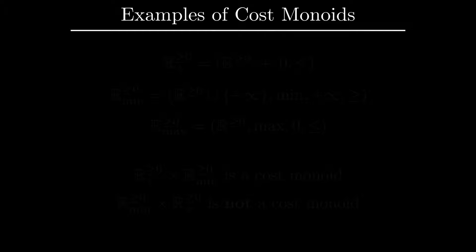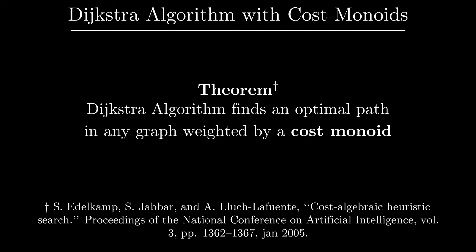Importance of the concept of the cost monoid is highlighted by the following theorem, which appeared in the reference at the bottom of this slide. It turns out that Dijkstra algorithm will always succeed in finding an optimal path between any two vertices as long as cost values form a cost monoid. As a matter of fact, many other classical algorithms in motion planning will work with cost monoids in place of positive real-valued costs, but this discussion is out of the scope of this conversation.